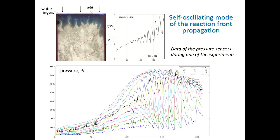In the figure below, the data of all pressure sensors during one of the experiments is shown. The curve which corresponds to the first pressure sensor from the inlet boundary is almost oscillation-free. This means that the source of the oscillations is the reaction front itself, rather than external influence.